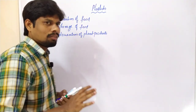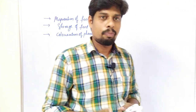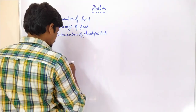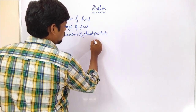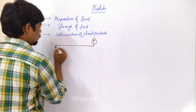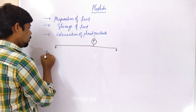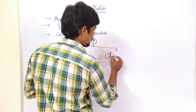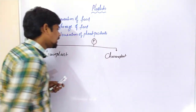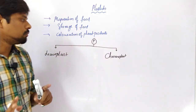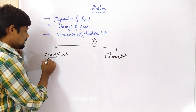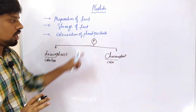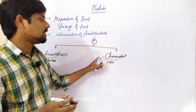Let us look at how many types of Plastids are present in the plant kingdom. These Plastids are broadly divided into two categories: one is Leucoplast and the second is Chromoplast. The word 'Leuco' means colorless, whereas 'Chromo' means color.